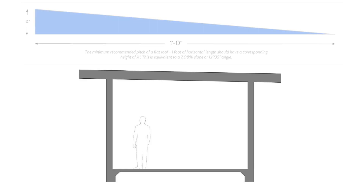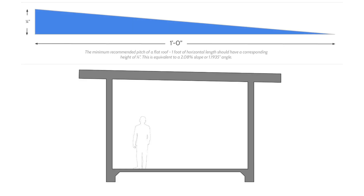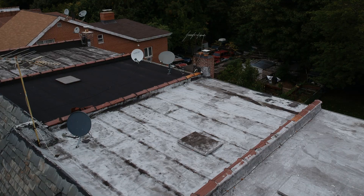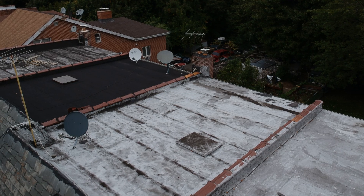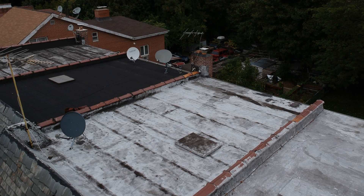It should go without saying that we want to make sure we're providing a minimum slope of a quarter inch to a foot when designing the layout of the roof plan, since flat roofs are never truly flat. But that's not typically the reason why we see leaks in a flat roof assembly.